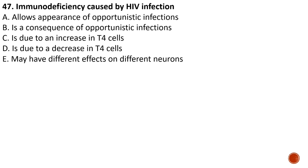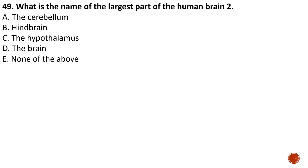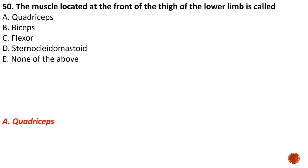Question forty-seven: immunodeficiency caused by HIV — A) allows the appearance of opportunistic diseases — correct; B) is a consequence of opportunistic disease — false; C) is due to an increase in CD4 cells — false. The correct answer is A — it allows for the appearance of opportunistic diseases by weakening the immune system. Question forty-eight: the largest organ in the human body is the skin. Question forty-nine: the cerebellum is the second largest part of the human brain, and the largest part overall is the cerebrum. Question fifty: the muscle located at the front of the thigh of the lower limb is the quadriceps femoris, giving answer A.